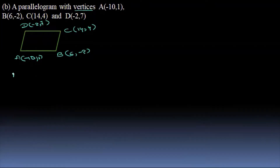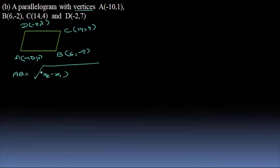And A, B, A, B, C, D, A, D. So, this is the square root of (x2 minus x1) whole square, plus (y2 minus y1) whole square.